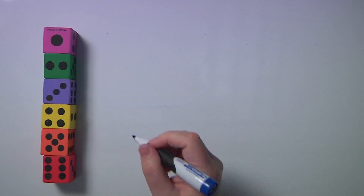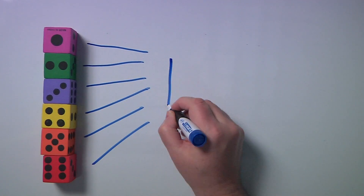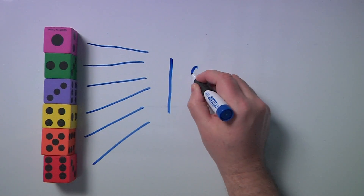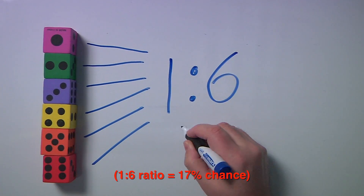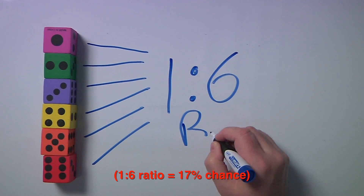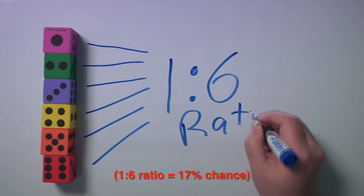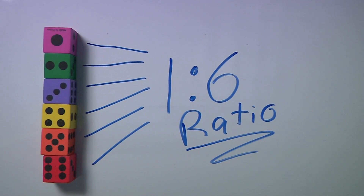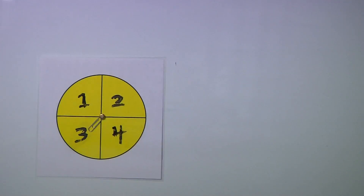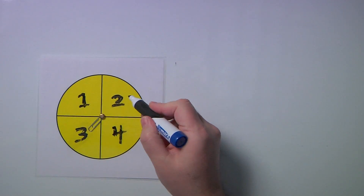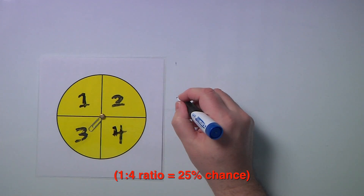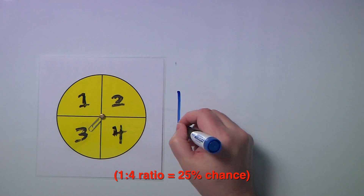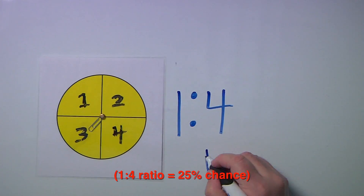Let's try it with a die. There's only one way for each number to land up out of six possible outcomes, so the probability for each number is a one-to-six ratio. Now let's try it with a spinner. There's only one way for each of the four numbers of this spinner to come up, so the probability for each number is a one-to-four ratio.